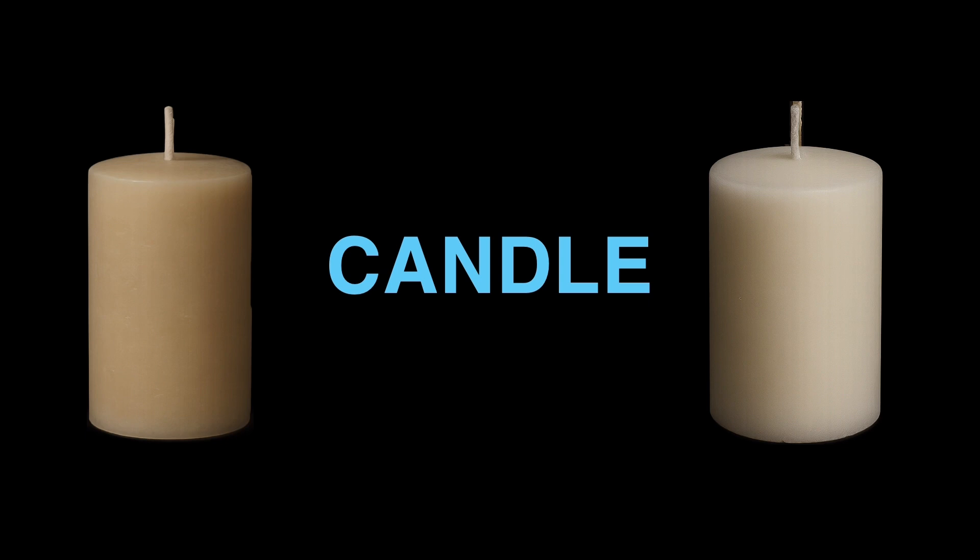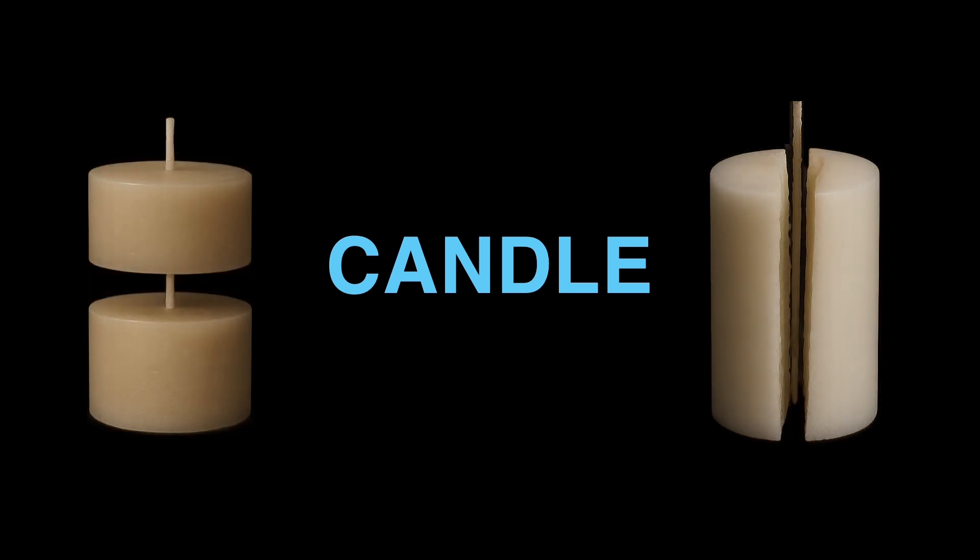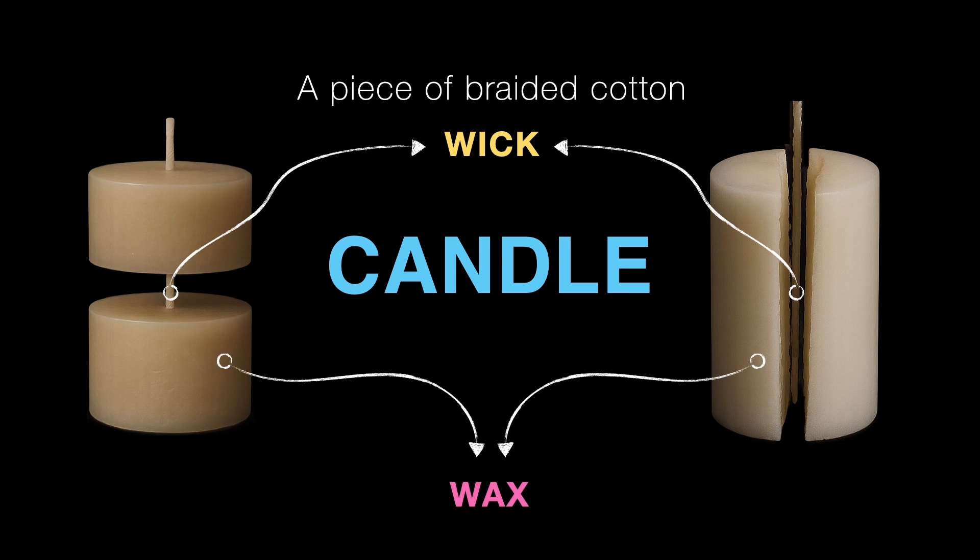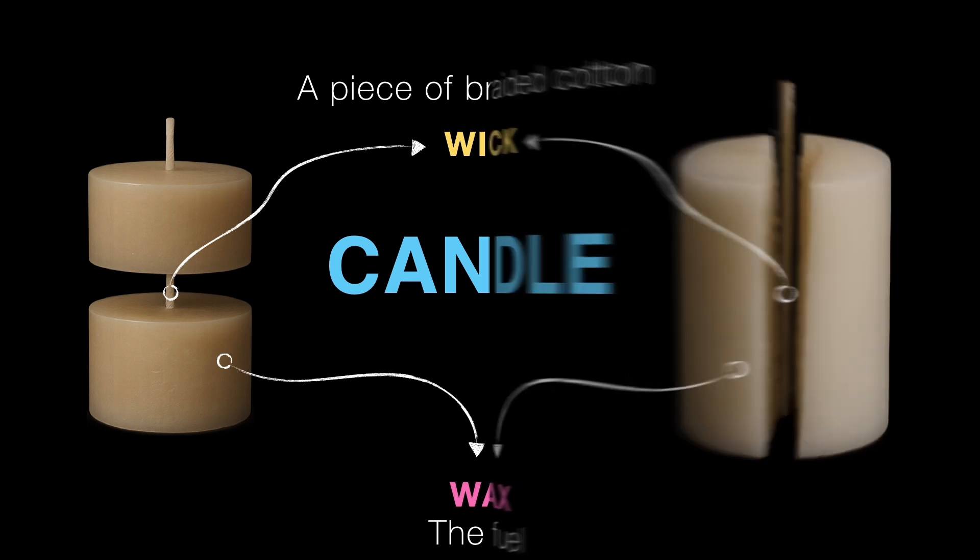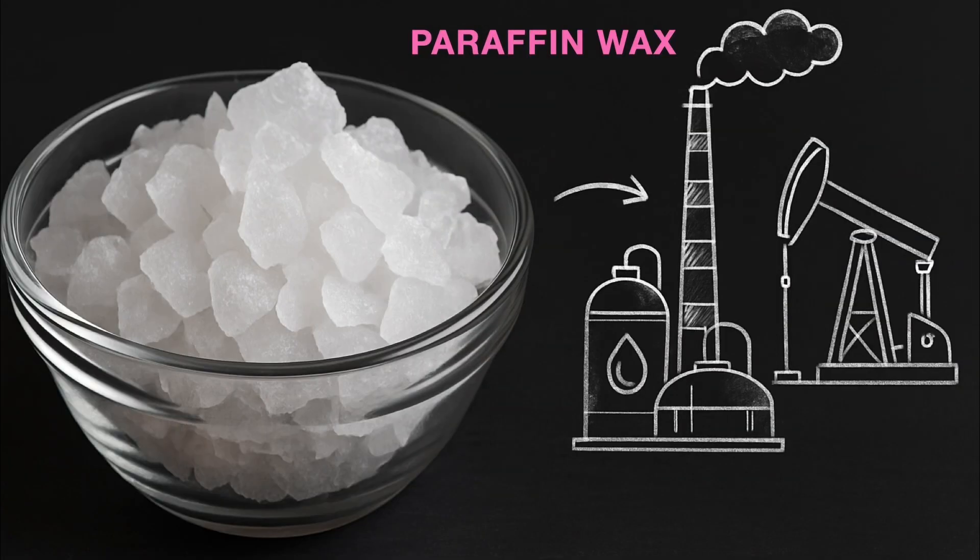You might be thinking, well I already know what a candle is, but let's break it down a bit. A candle is made of two main parts: the wick and the wax. The wick is usually a piece of braided cotton and wax. That's the fuel that helps the candle burn.